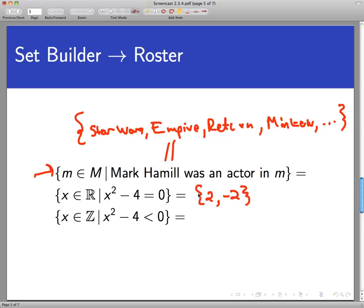In this case the roster notation is shorter, although it may not highlight the property so much that I'm thinking of. Third example: what is the set of all integers x is in the integers? Now notice the change in the universal set, such that x squared minus 4 is less than 0. The universal set makes a big difference here.